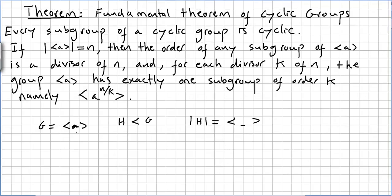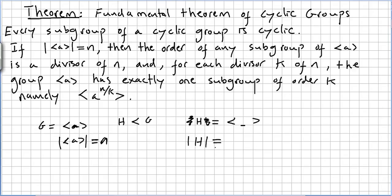Now, if the order of this group is N, then the order of any subgroup is a divisor of N. So the order of H, a subgroup, will be N divided by some K. And for each divisor K of N, the group generated by A has exactly one subgroup of order K.